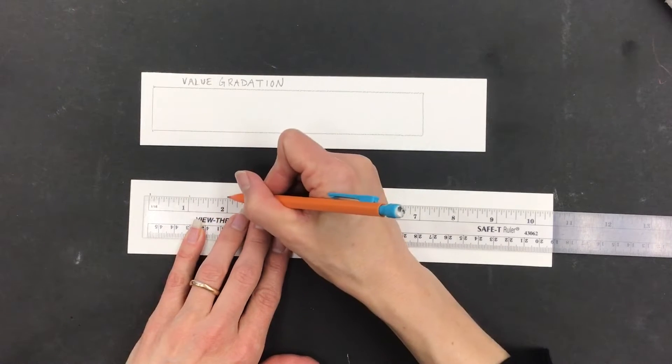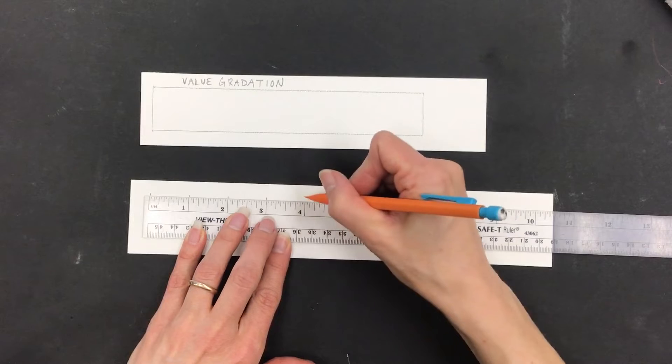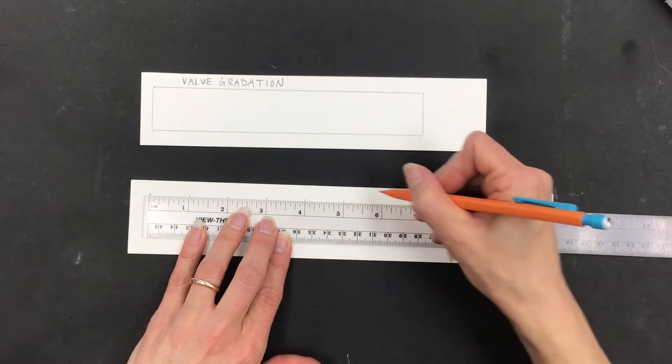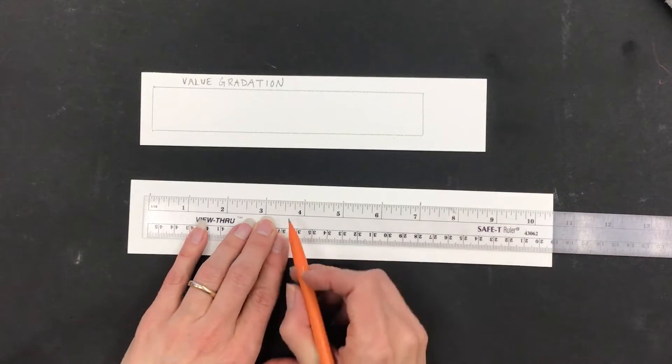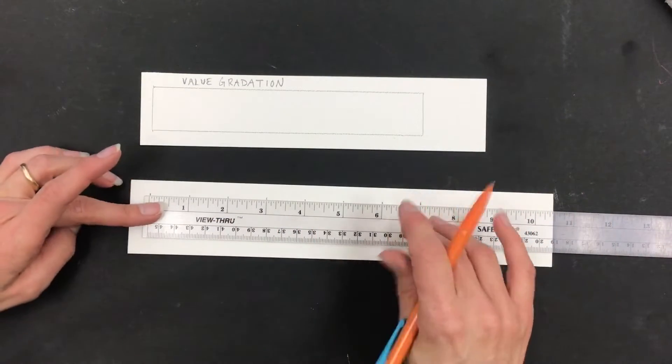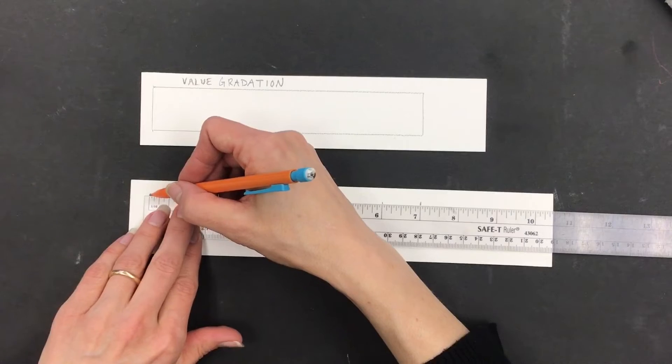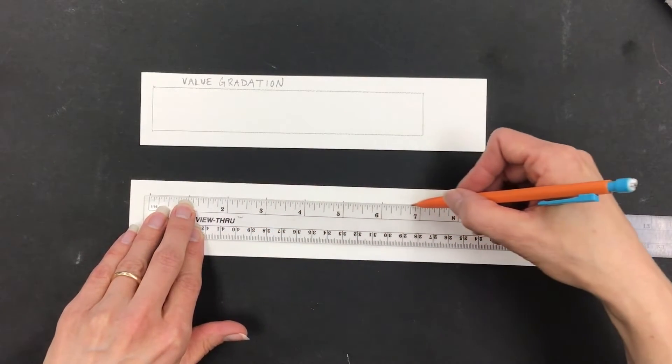I'm doing an odd number so that we can have a middle box be our middle gray. So now I have my tally marks, I'm also going to draw a line right there.